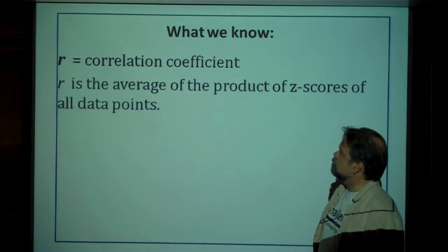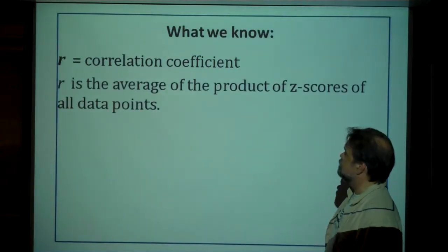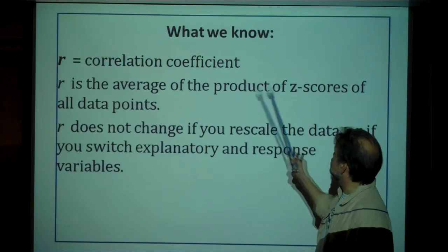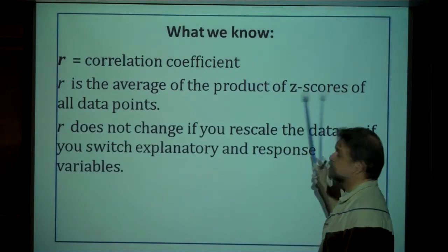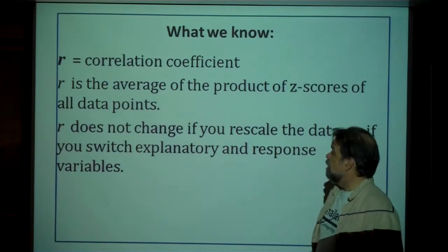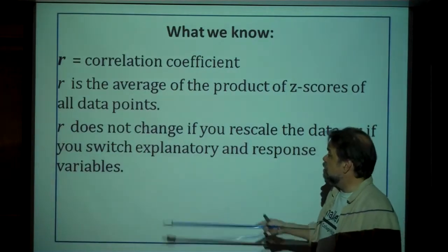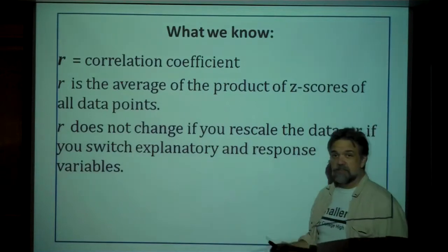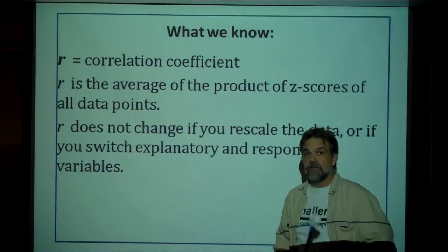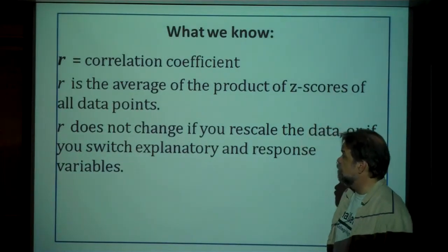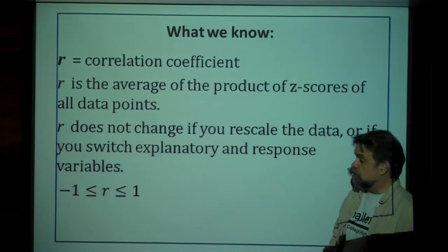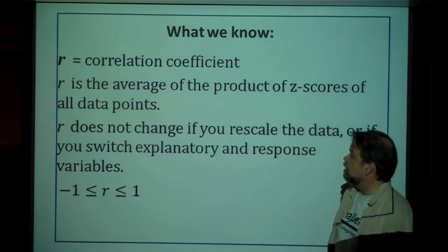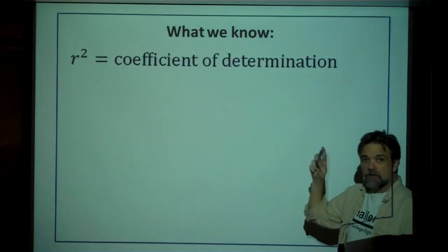Let's talk about the correlation coefficient for a second. The correlation coefficient is the average of the product of z-scores of all data points. What you need to know is it doesn't change if you rescale your data, and it also doesn't change if you switch your explanatory and response variables. Also remember that r is always between negative one and one.